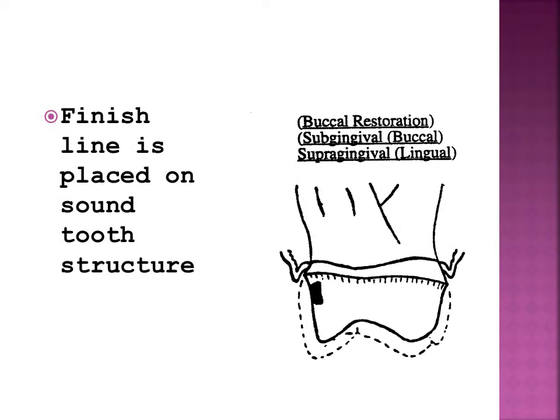When defects or restorations are present at the cervical third of the tooth, it is advisable to extend the finish lines of crown preparation subgingivally, apical to the defect or restoration.